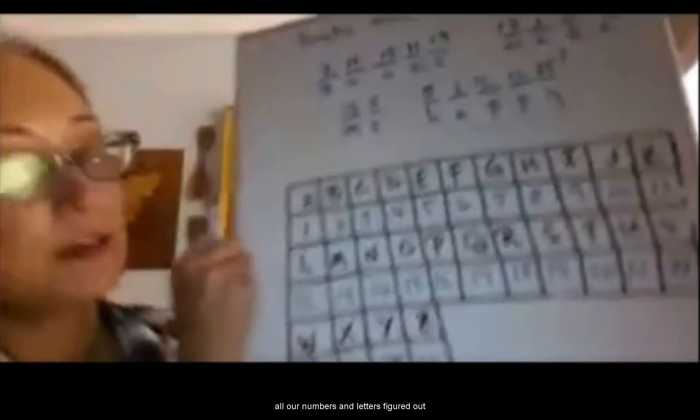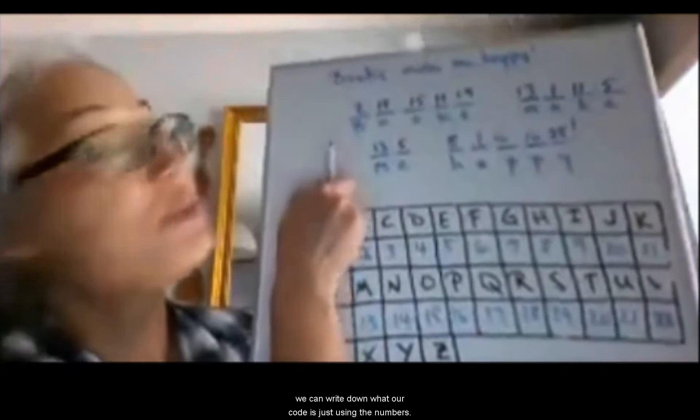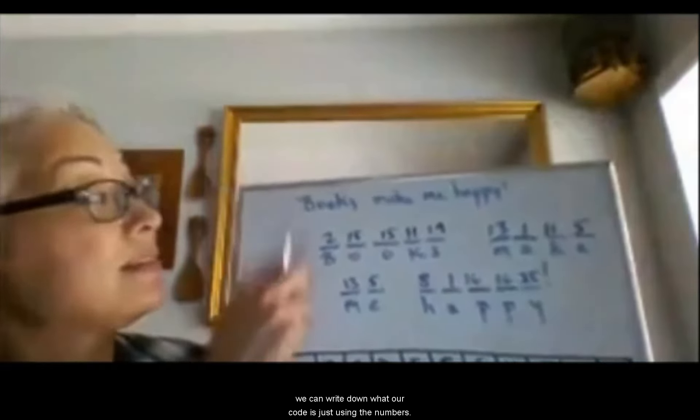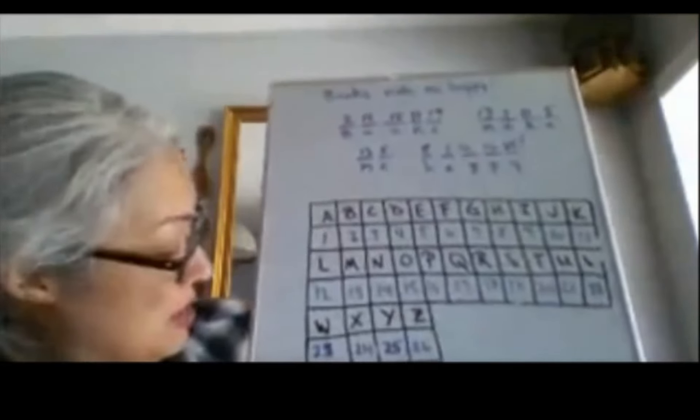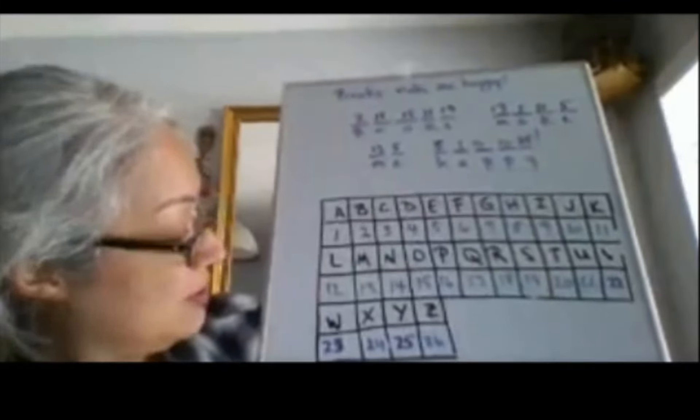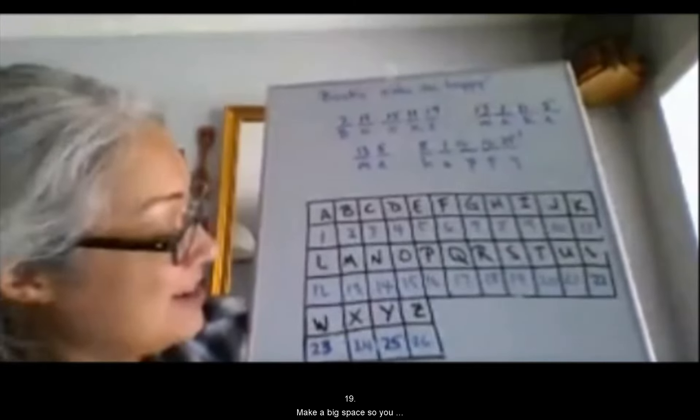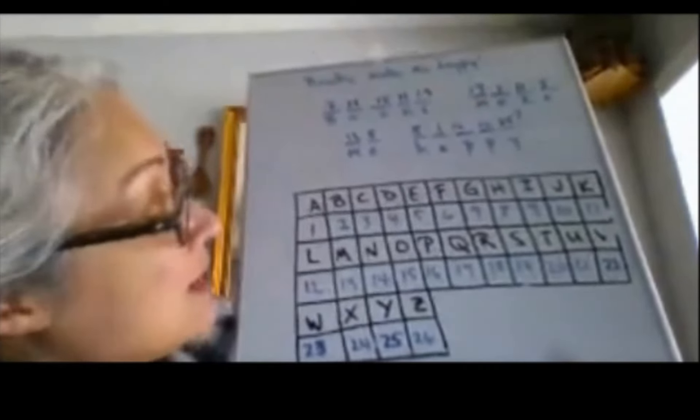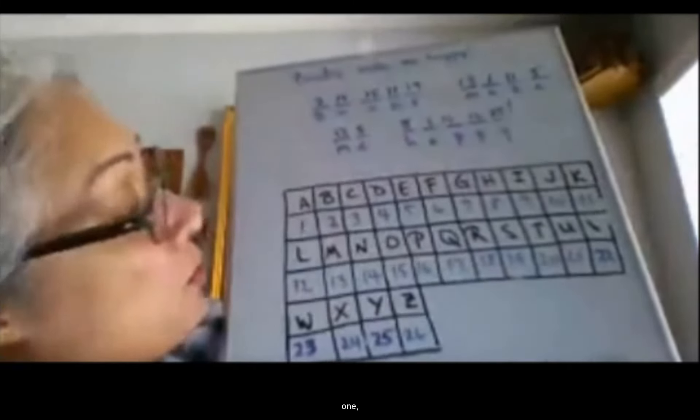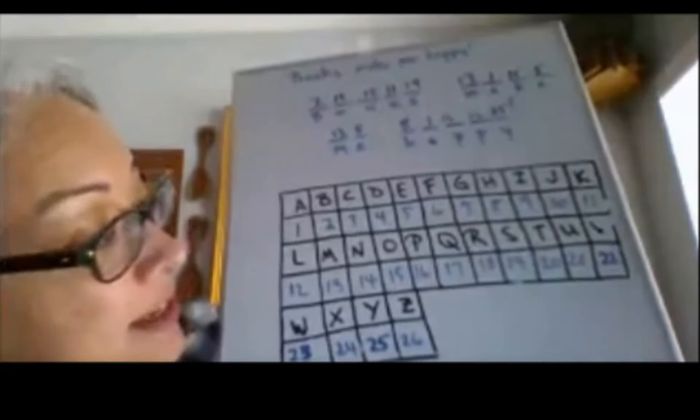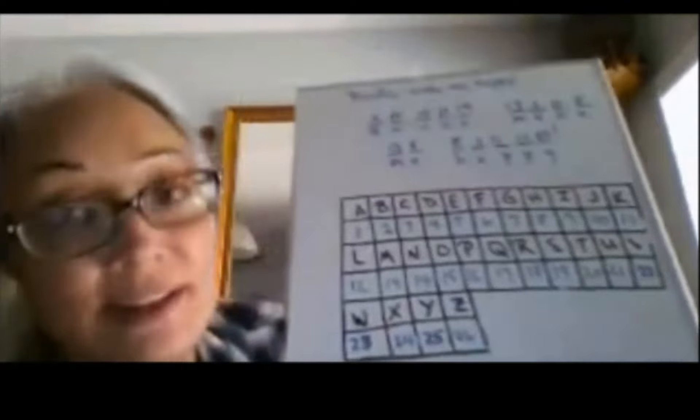Okay. Now that we have all our numbers and letters figured out, we can write down what our code is just using the numbers. So we have a 2, and then two 15s, 11, 19. Make a big space so you know it's another word. We have 13, 1, 11, 5. Okay.